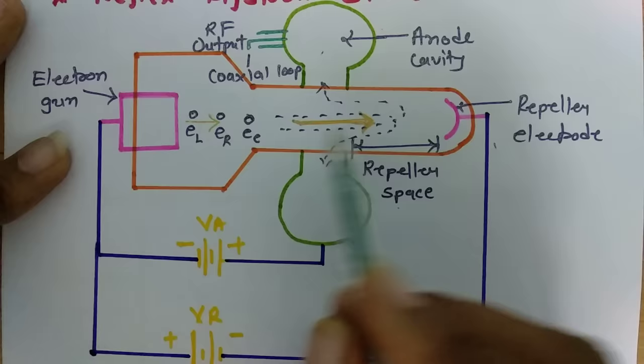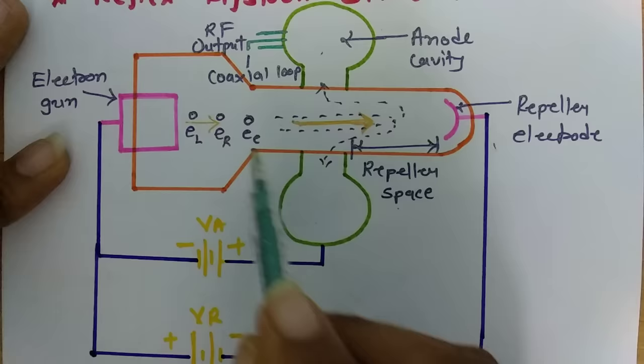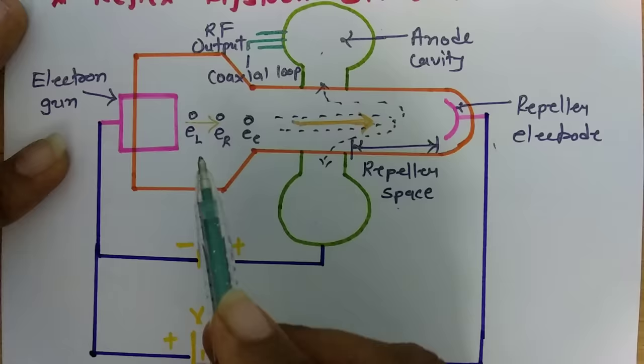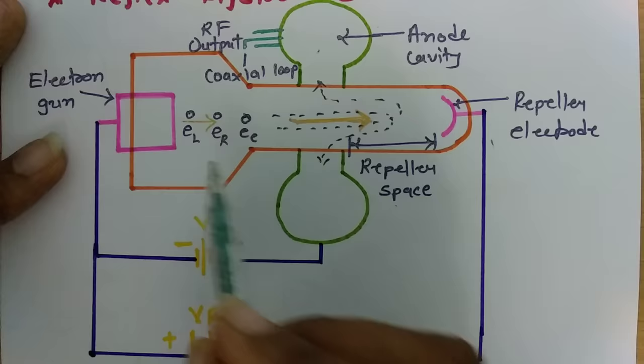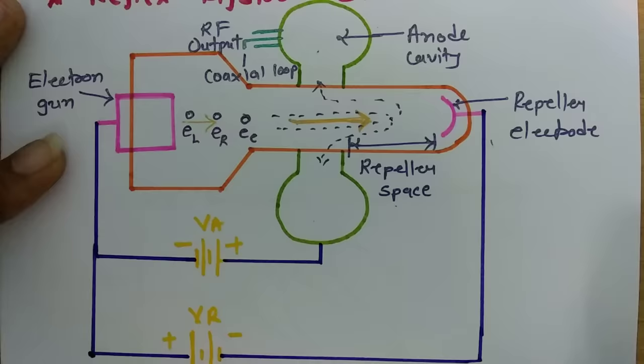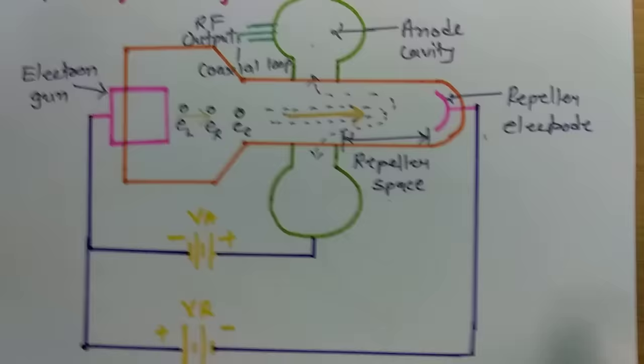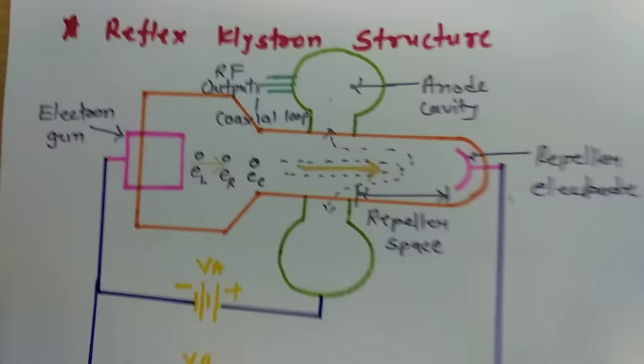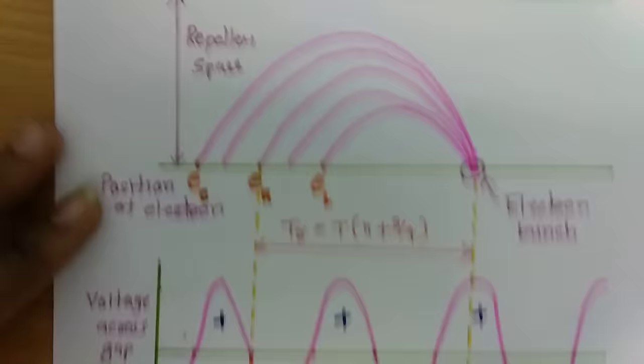Velocity modulation means those electrons which are early are provided with lesser velocity, and those electrons which are late are provided with higher velocity. So after a fixed time period all electrons are getting bunched at a fixed position. To understand this we need to see the applegate diagram of this reflex klystron.